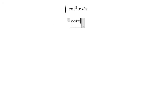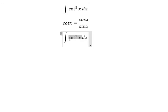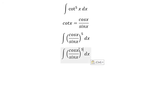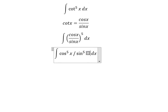Cotangent x is about cosine x over sine x, so we change this one into here. We go about cosine x to the power of 5 over sine x to the power of 5.